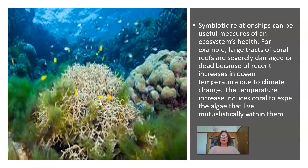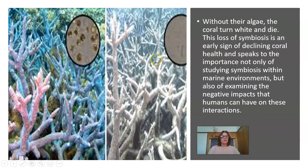Symbiotic relationships can be useful measures of an ecosystem's health. For example, large tracts of coral reefs are severely damaged or dead because of recent increases in ocean temperatures due to climate change. The temperature increase induces coral to expel the algae that live mutualistically within them. Without the algae, the coral turn white and die. The loss of symbiosis is an early sign of declining coral health and speaks to the importance of studying symbiosis within marine environments, and of examining the negative impacts that humans can have on these interactions.